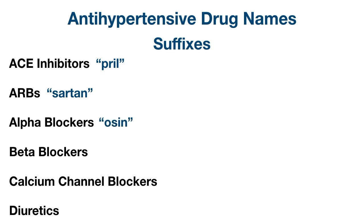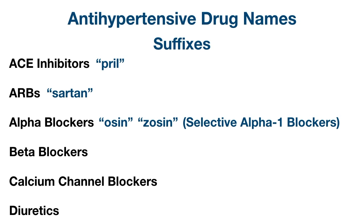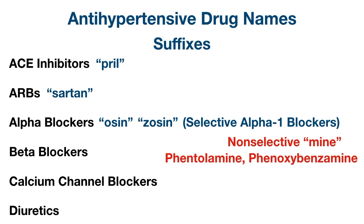Alpha blockers end in -osin, and many of the alpha blockers specific to treating hypertension end in -zosin with a Z. The suffix -osin or -zosin applies to selective alpha-1 blockers. There are also non-selective alpha-1 and alpha-2 blockers that typically end in -amine or -mine, such as phentolamine and phenoxybenzamine. They're usually considered for pheochromocytoma and cocaine-induced hypertension, but since they're used more for catecholamine-induced hypertension, we'll focus on selective alpha-1 antagonists for this video.